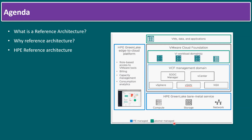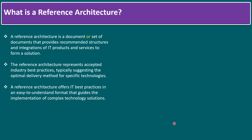This is one reference architecture — there are plenty of them. Here is the definition: a reference architecture is a document or set of documents that provides recommended structures and integration of IT products and services to form solutions. It represents accepted industry best practices, typically suggesting the optimal delivery method for specific technologies, in an easy-to-understand format that guides the implementation of complex technology solutions.